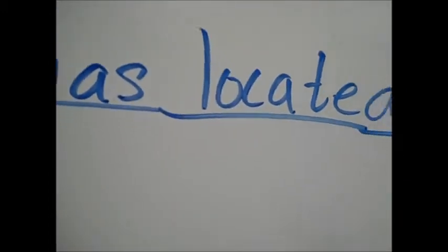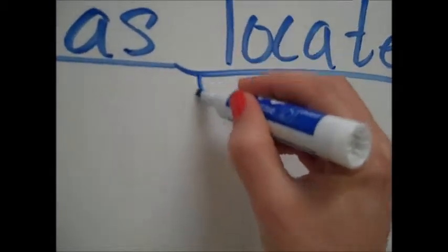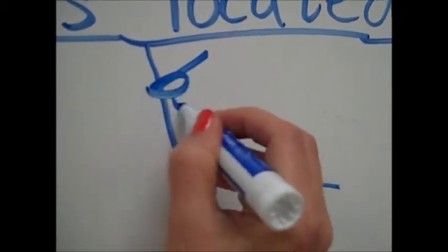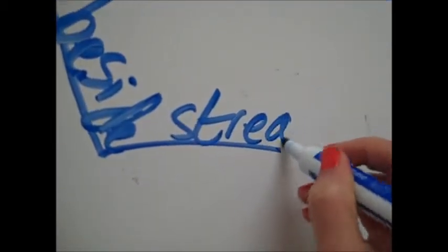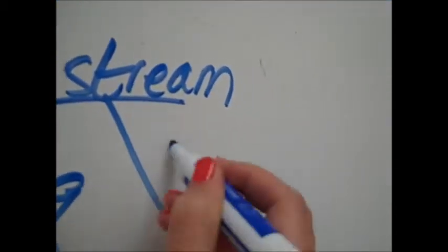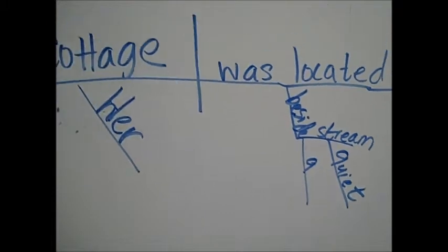And then your prepositional phrase: 'beside stream', 'a stream', 'a quiet stream'. That's number one. I'll back up.